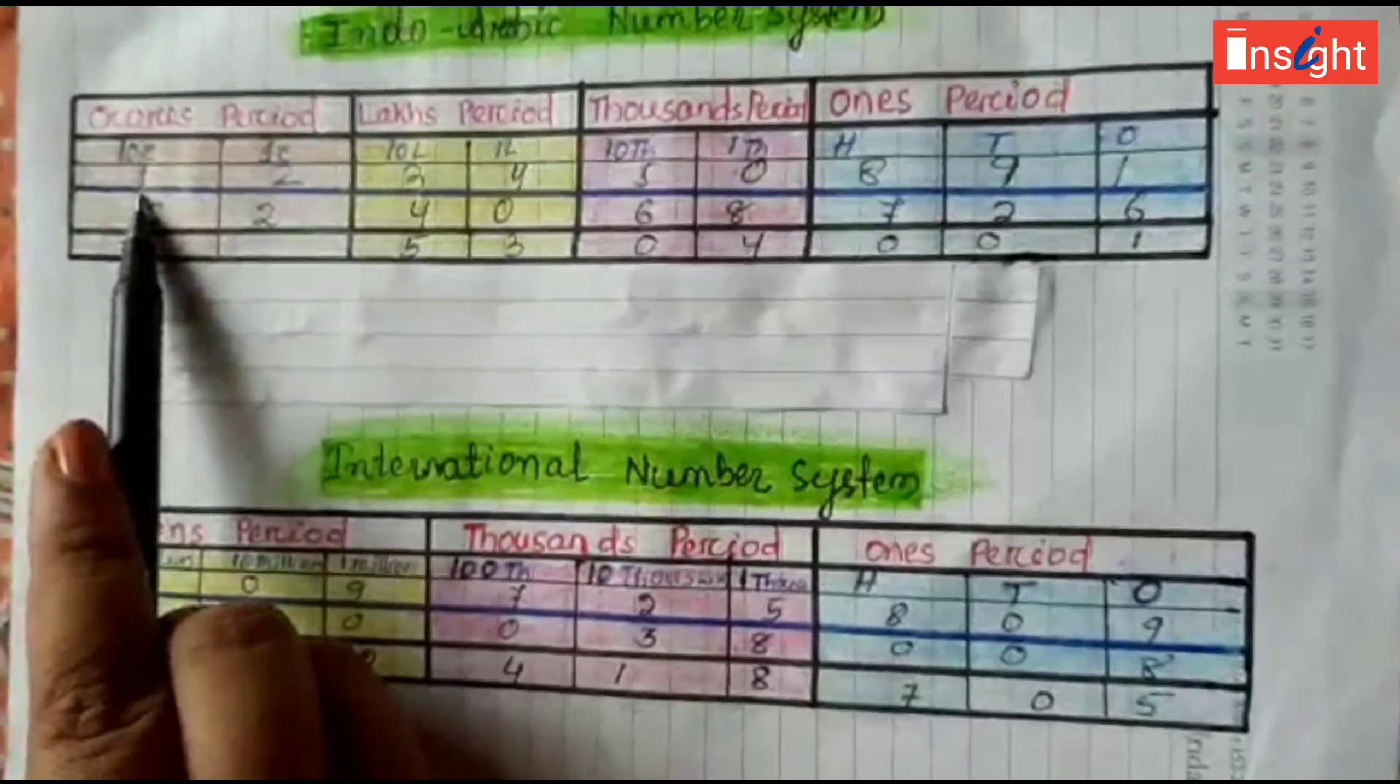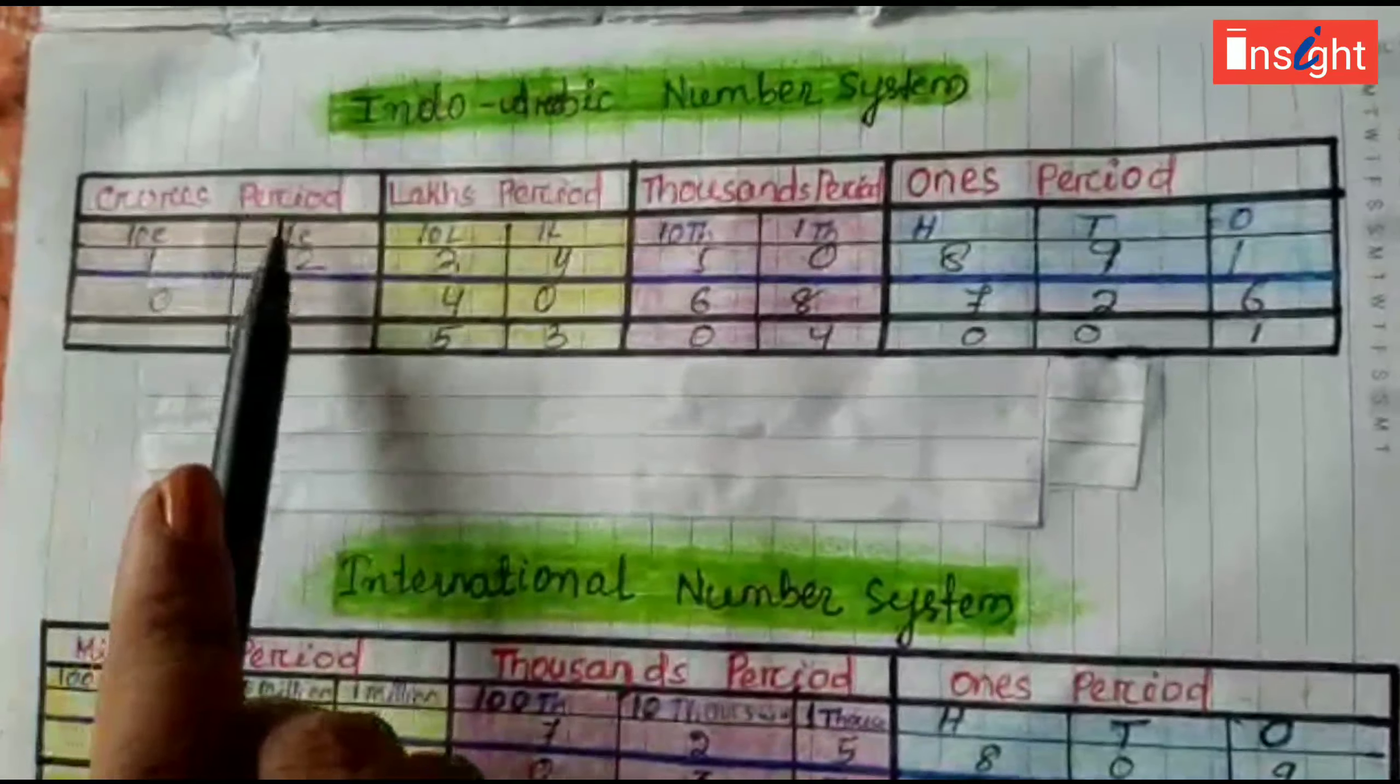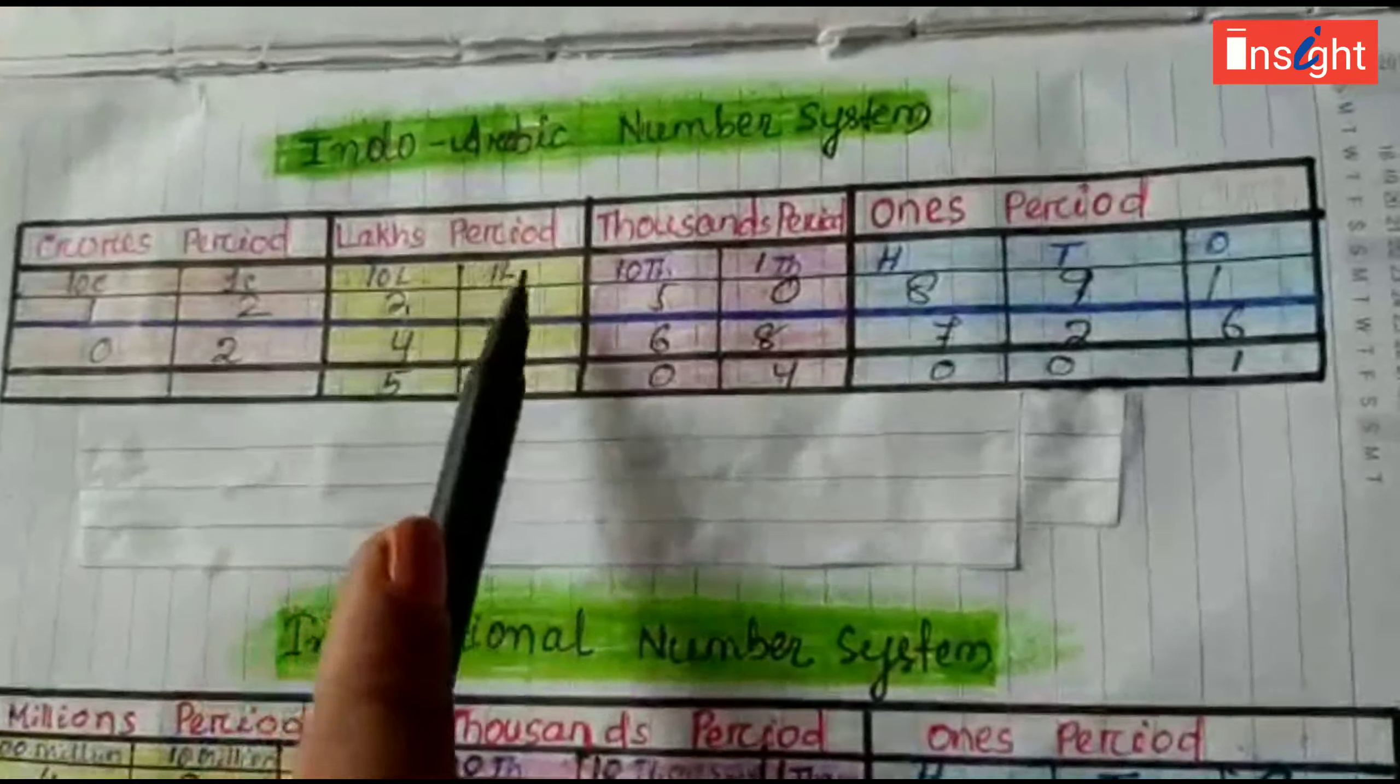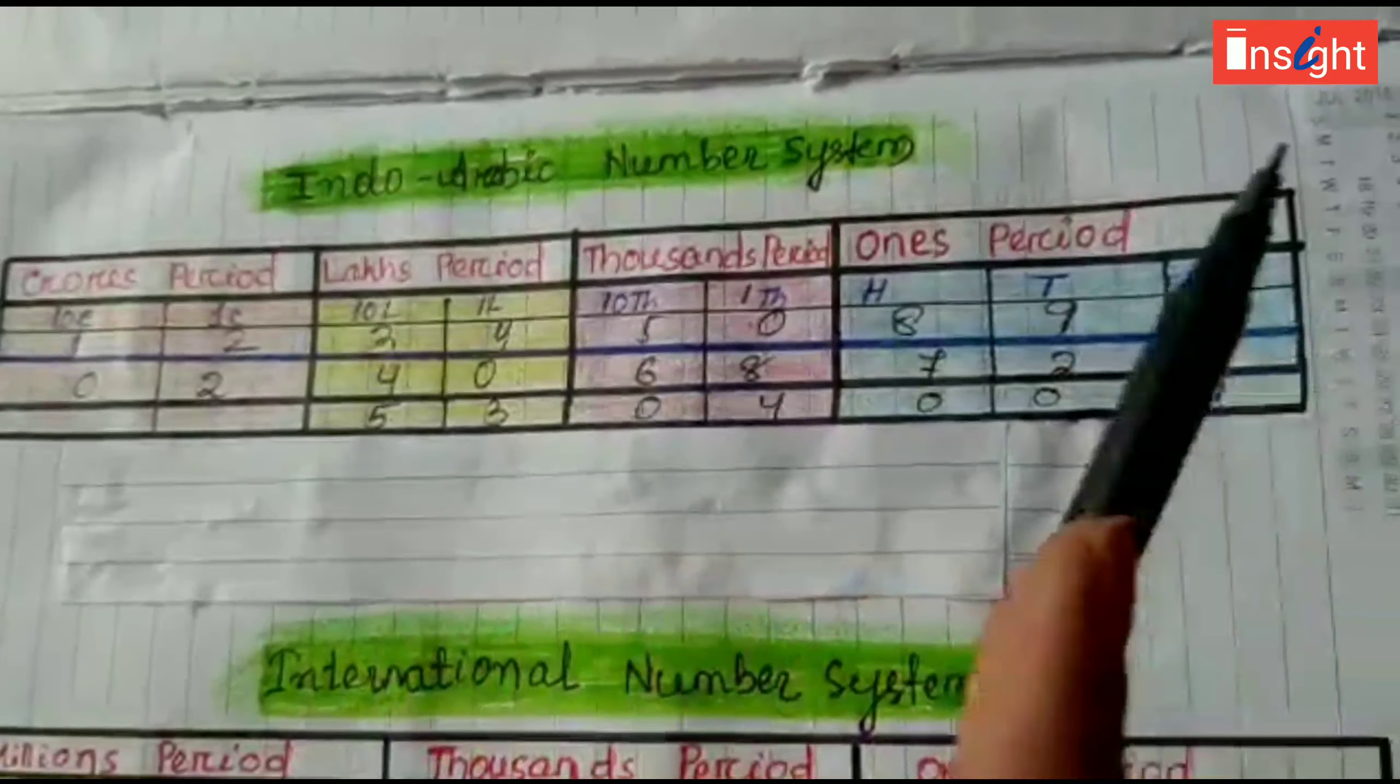See, first here taken in crores place one, one crores place two, ten lakhs place three, one lakhs place four, like this and so on.